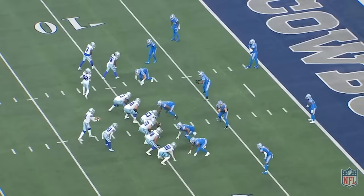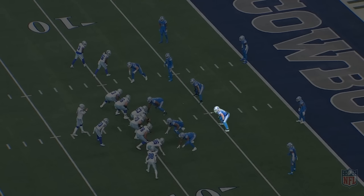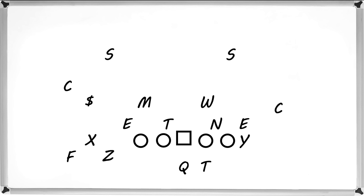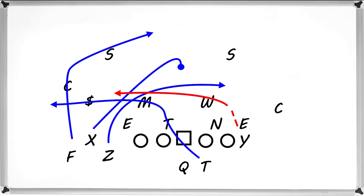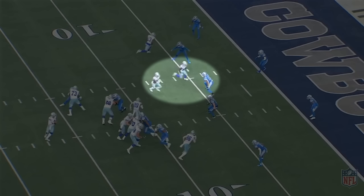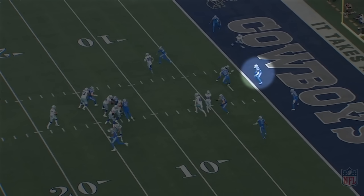Defenses have a variety of ways to combat bunch formations. One of the most common is using a box check — you can see the defenders on the bunch side communicating the box check, and the defenders on the weak side communicating how they want to handle the nub alignment. Essentially, you have a defender matching the first threat to the flat, another matching the first threat short and inside, and two deep defenders matching the first deep out and deep inside-breaking routes. The Cowboys are running a variation of a mesh concept, which is one of Kellen Moore's staple concepts. With the Cowboys releasing two receivers short and inside, the linebacker lets the underneath drag route go and matches the sit route, which also helps occupy the safety playing the first deep inside route.